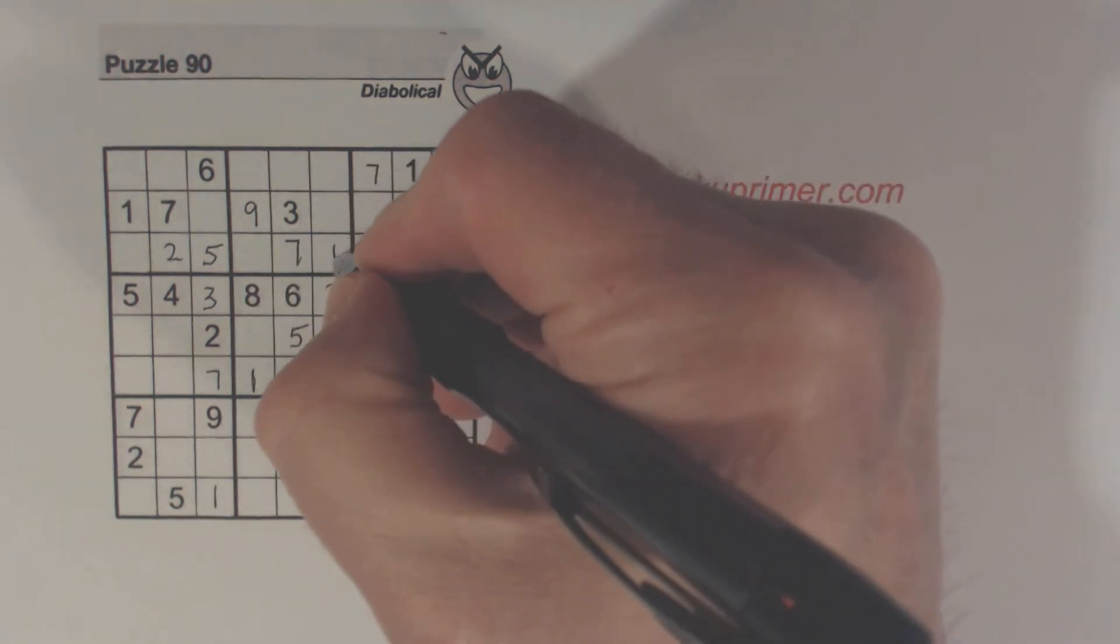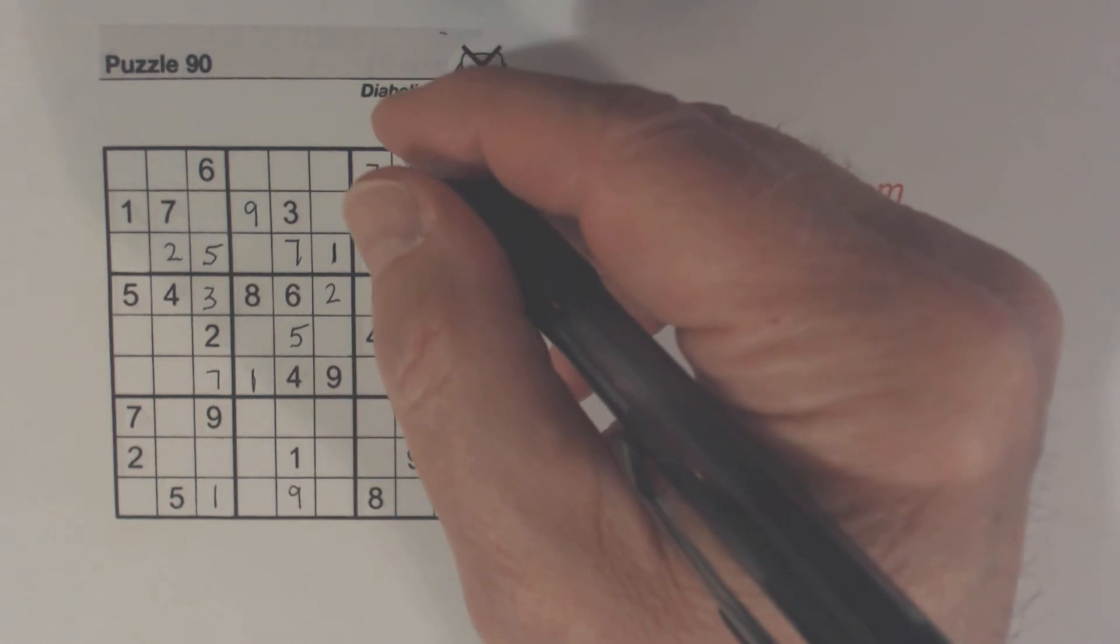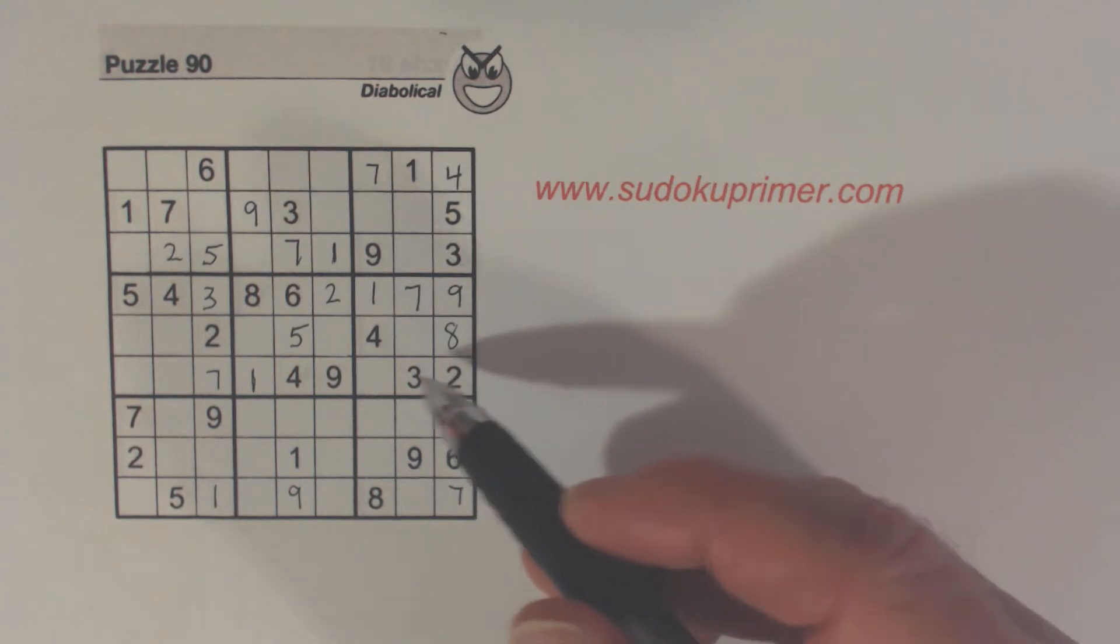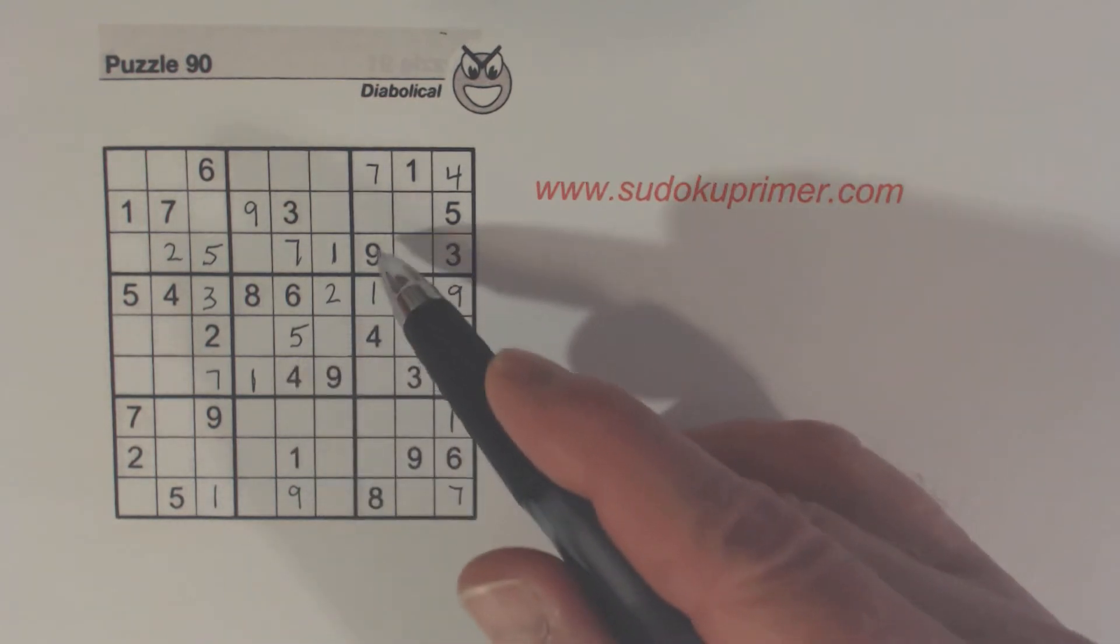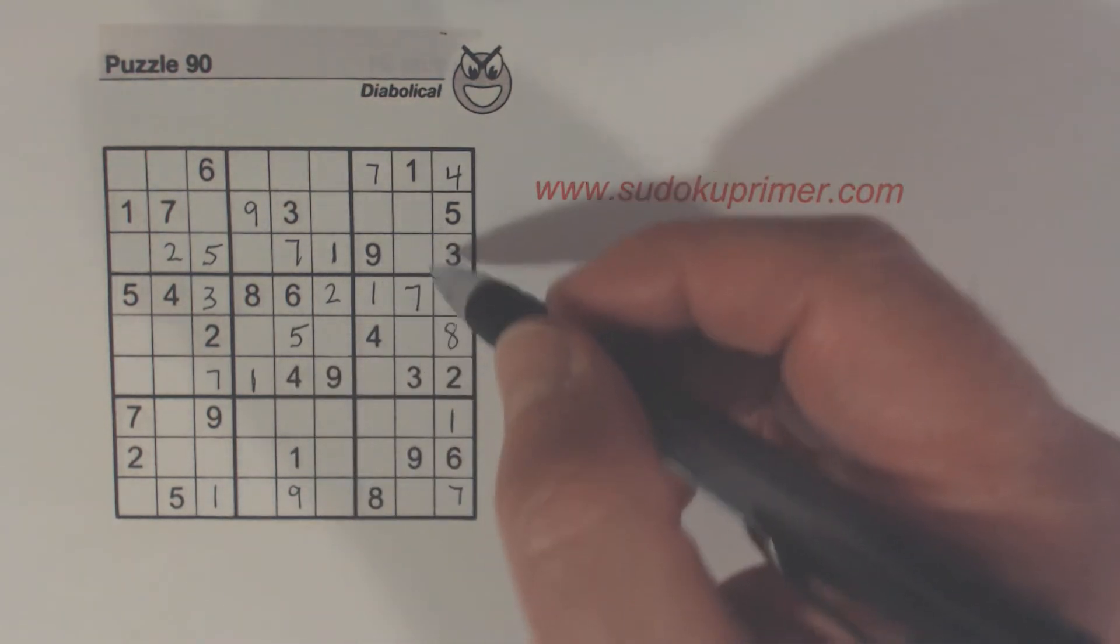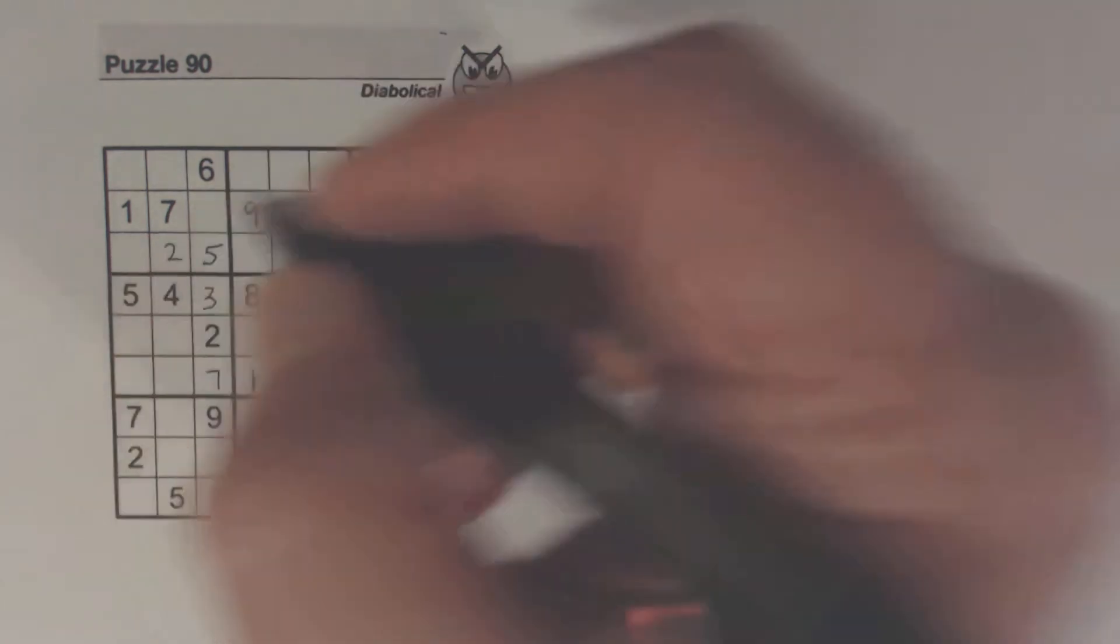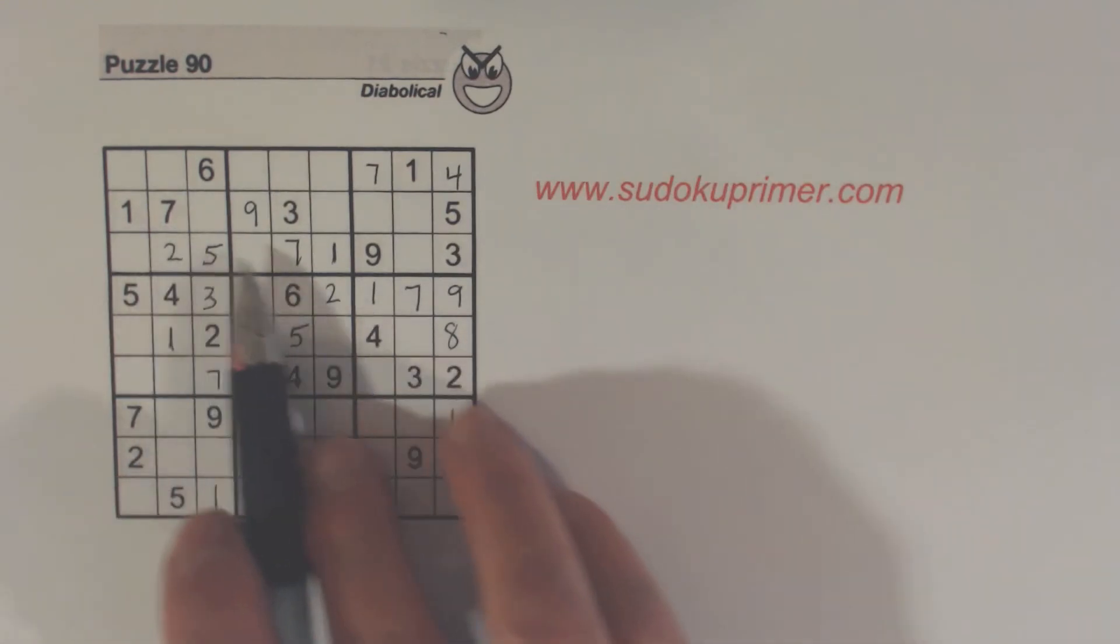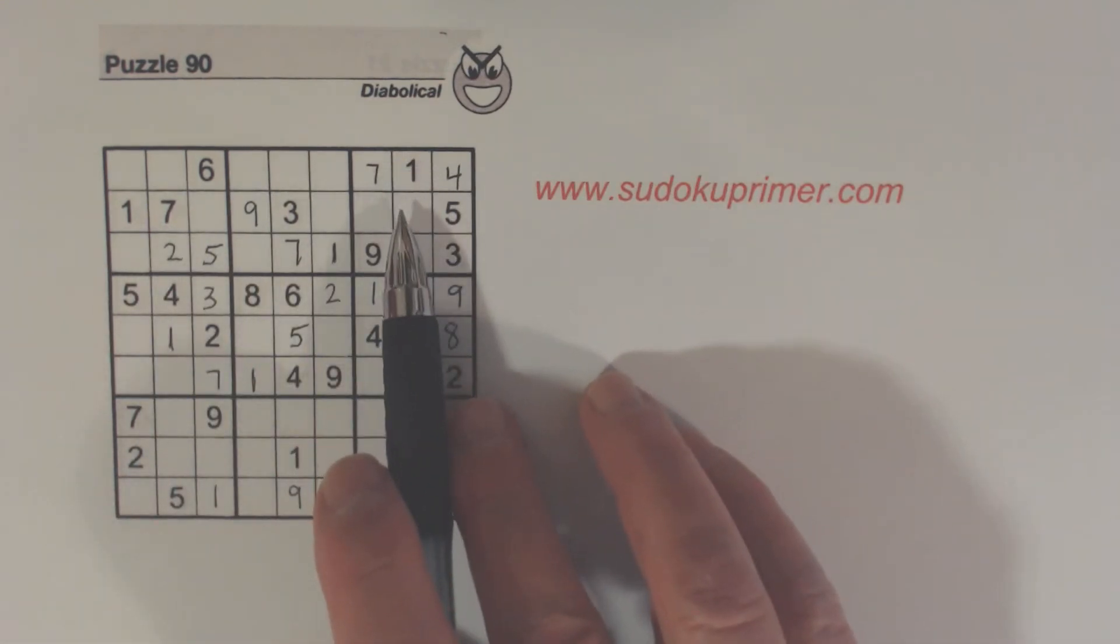With that 1, we can fill in that 1. Let's see, we can fill in this 1 right there. And now we have all our 1's. 1's are done.